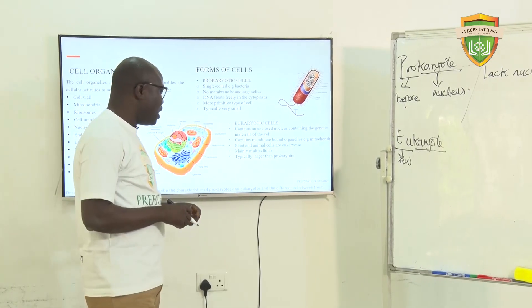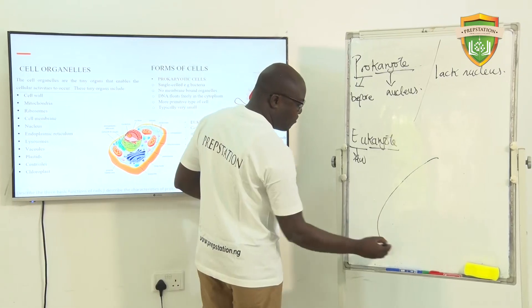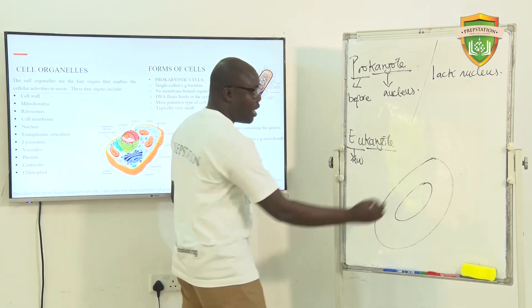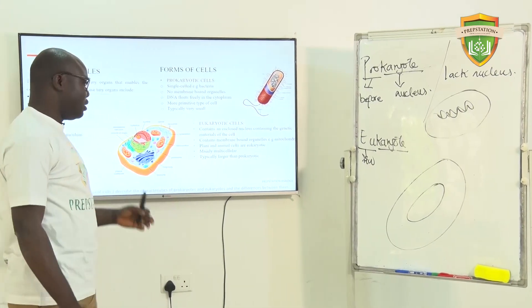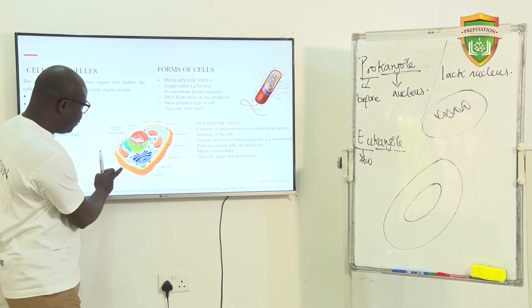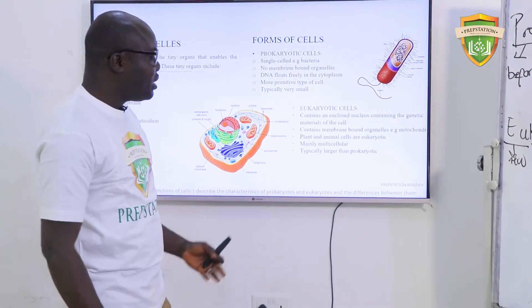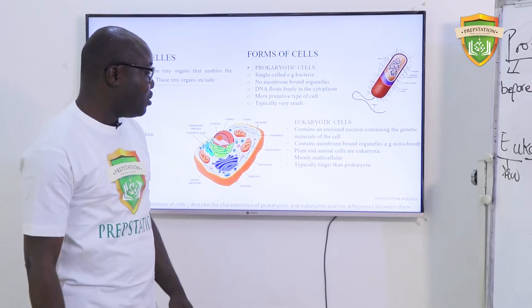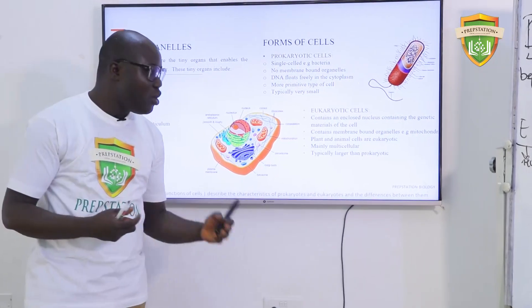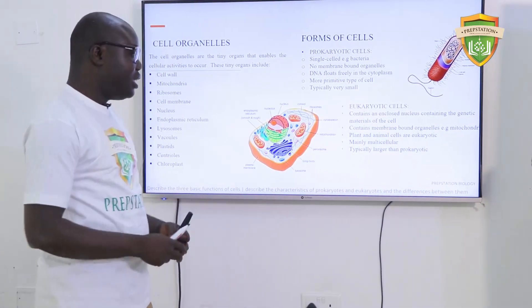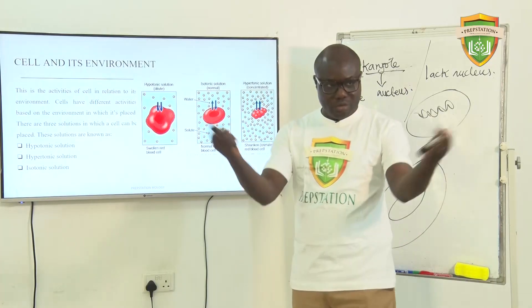Now let's move on to eukaryotic cells. They contain an enclosed nucleus that houses the genetic materials of the cell. They also contain membrane-bound organelles — for example, mitochondria. You can see the mitochondria clearly marked within the eukaryotic cell. Plant and animal cells are eukaryotic. They are mainly multicellular and are typically larger than the prokaryotic cells — they are bigger and visible.